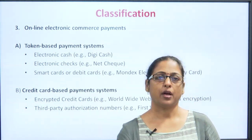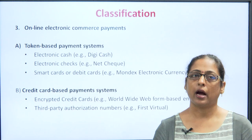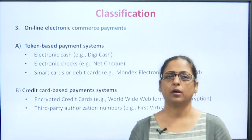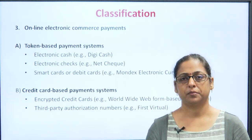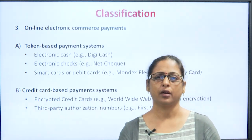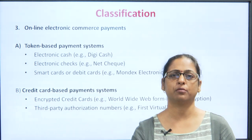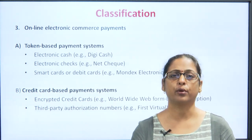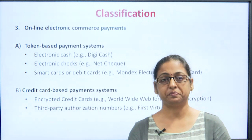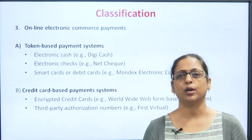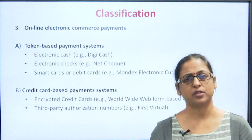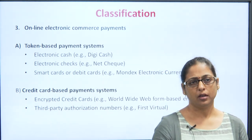The third kind of payment system is online electronic commerce payment system. These are again categorized into two forms — the token-based payment system and the credit card-based payment system. The token-based payment system is one in which the customer applies for a particular amount of token, maybe cryptocurrency or any kind of thing, and for every transaction the customer has to apply from the bank to get a token, which once received is transferred to the merchant. While in the credit card payment system, the customer already has a card which has pre-loaded money and which he can use anytime whenever he wants to do the transaction.